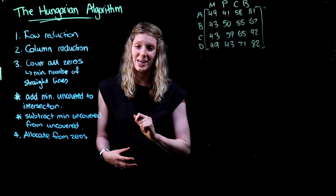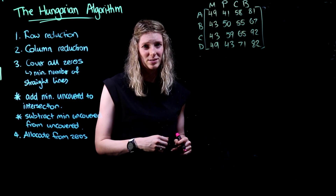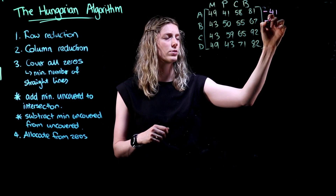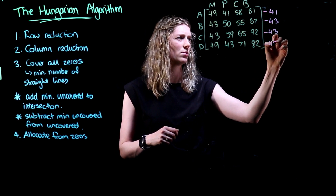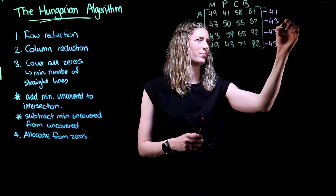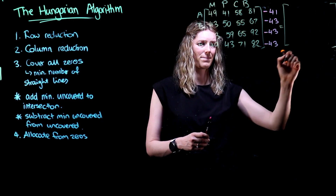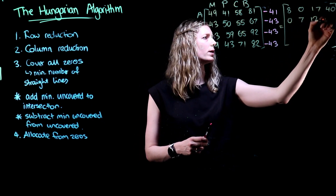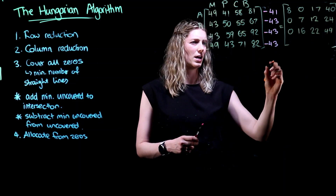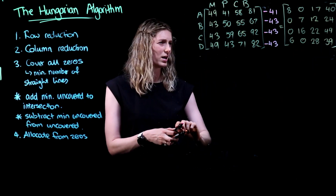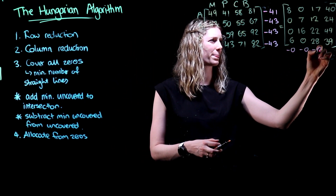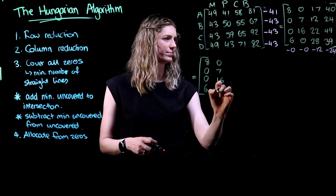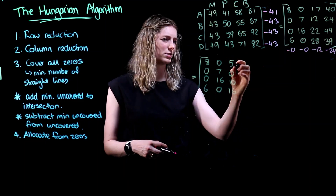We're going to have a look at this example here to see what we can do in those situations. Again we're going to start off with step one, completing our row reduction by subtracting the smallest value from each of our rows. We are going to end up with 8, 0, 17, 40, 0, 7, 12, 24, 0, 16, 22 and 49, and then finally 6, 0, 28 and 39. Then we complete our column subtraction — column 1 and column 2 values stay the same, column 3 we subtract 12 from each, and column 4 we subtract 24 from each value.